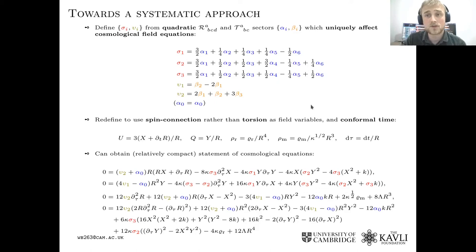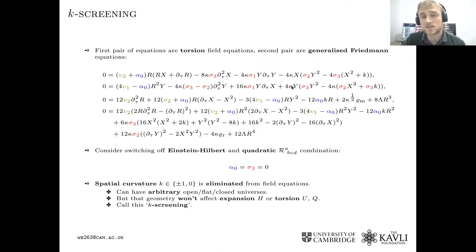So if you look at the cosmological field equations, it turns out that the quadratic Riemann coupling constants, there are only three combinations which actually feature in those field equations, three linear combinations, and only two linear combinations of the quadratic torsion coupling constants. The Einstein-Hilbert term has a unique effect, so we don't need to find anything new for that. If you look at the cosmological field equations, something that you can notice is that if you apply two very simple parameter constraints, you can actually eliminate the spatial curvature k from the dynamics completely.